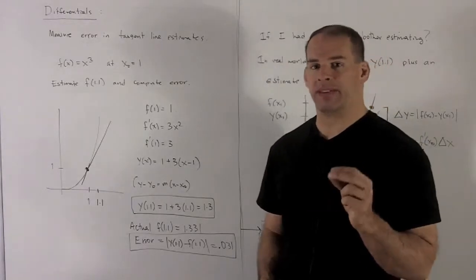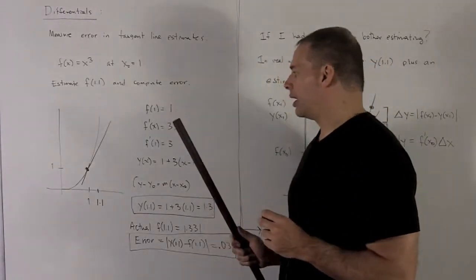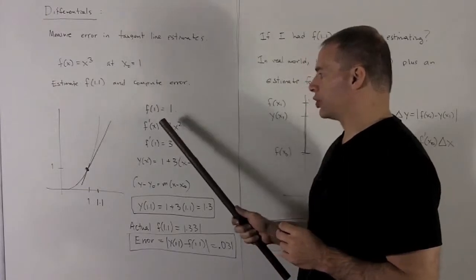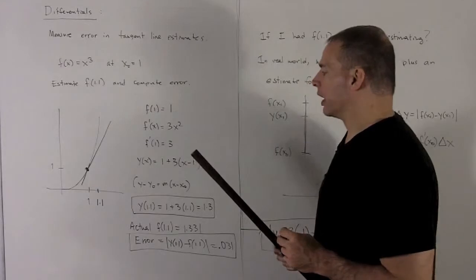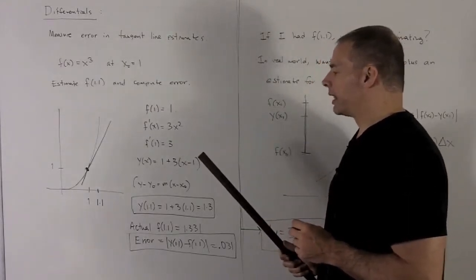The slope is going to be given by the derivative of the function evaluated at 1. So we take the derivative of x cubed, get 3x squared, evaluate that at 1 and I get a 3. So 3 is going to be the slope of my line.